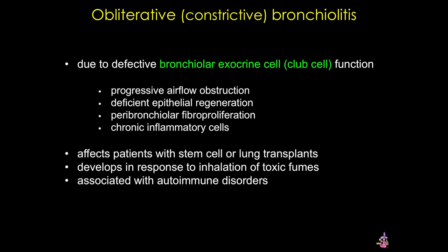Let's look at another pathology of bronchioles. Recall that bronchiolar exocrine cells, or club cells, are unique to the bronchiole. They secrete antimicrobial enzymes for local immune defense, break down inhaled toxins, secrete surfactant-like substances, and also serve as stem cells. Defects in these cells, either in function or loss of the cells, can lead to obliterative or constrictive bronchiolitis, characterized by progressive airflow obstruction. However, the pathophysiology of this disease is not completely understood.